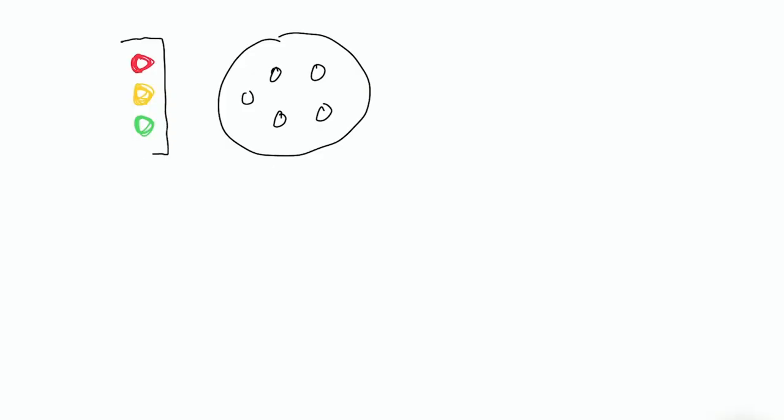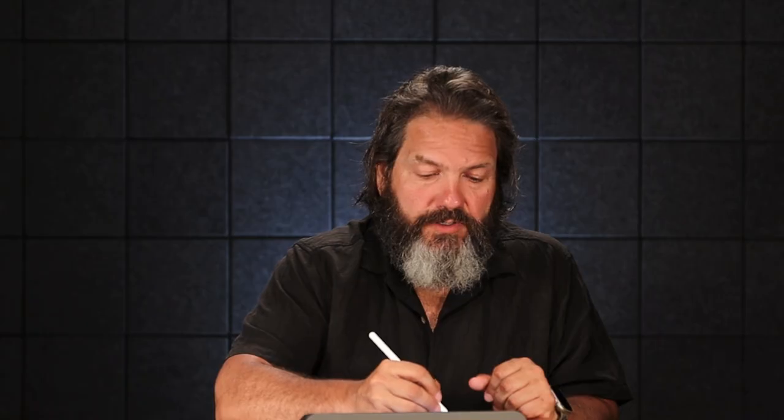Let's start with an easy example: colors. You have red, yellow, green — those are just individually colors. But if you were to zoom out and make sense of them by grouping them in some way, you might think of it as a stoplight, or you could think of it as the three colors of RGB.